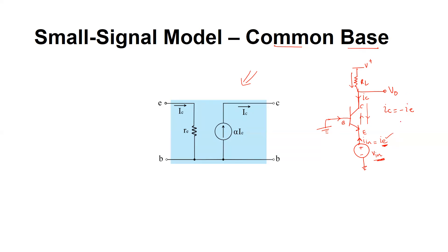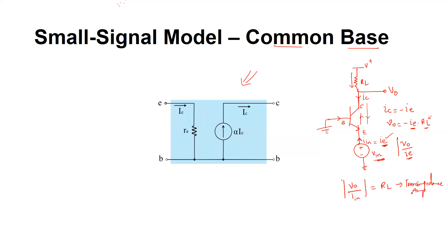We can write i_c as the negative of i_e, neglecting the contribution from the base current. So v_o in this case is minus i_e times R_L. Taking the trans-impedance gain — v_o divided by i_in, where i_e equals i_in — the magnitude is R_L. This gives us a trans-impedance amplifier. To make a voltage amplifier, we take the gain as v_o over v_in.